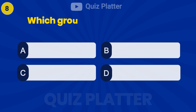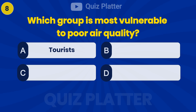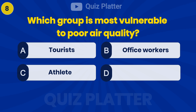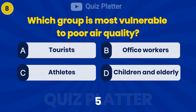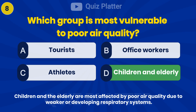Which group is most vulnerable to poor air quality? Answer: D — Children and elderly.